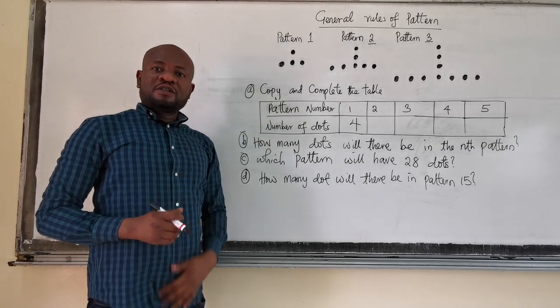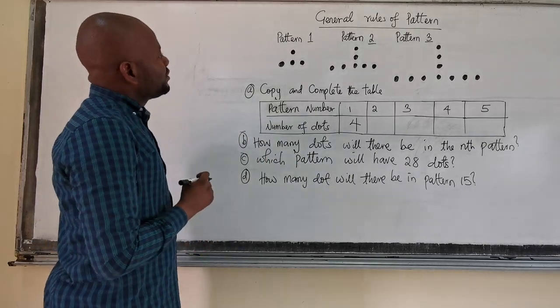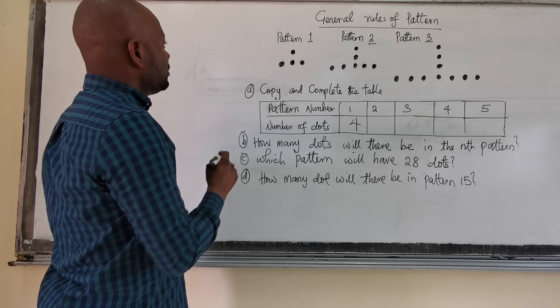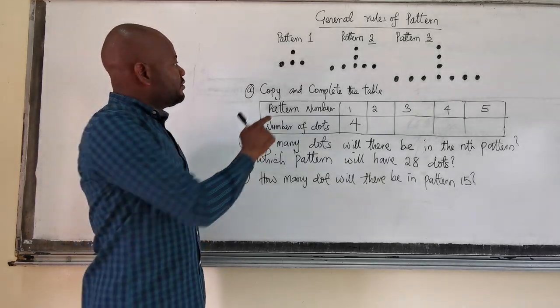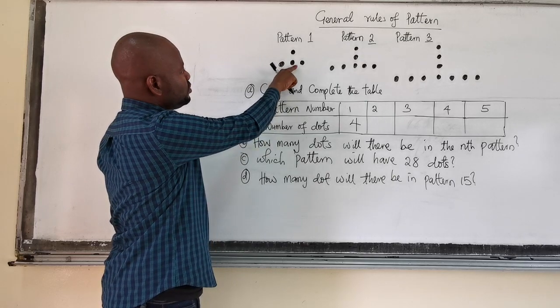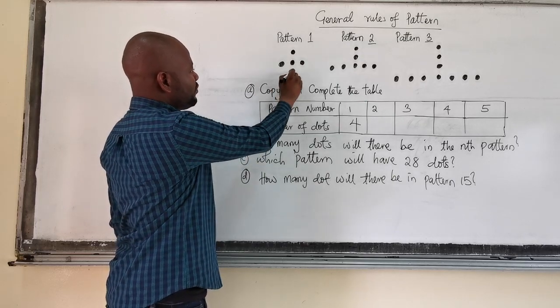So for me to tackle this question, I will take them one after the other, the first one. From the first pattern, you can see that, how many dots do we have? We have 1, 2, 3, 4. We have 4 dots here.